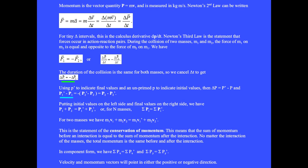Using p-prime to indicate final values and unprime p for initial values, delta-p equals p-prime minus p. So we have p1-prime minus p1 equals minus(p2-prime minus p2). Rearranging, the initial momentums p1 plus p2 equals the final momentums p1-prime plus p2-prime. For n masses, the sum of the initial momentums equals the sum of the final momentums, where the subscript i goes from 1 to n.